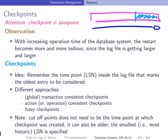We will investigate three different approaches. The first one is a very simple one called transaction-consistent checkpoints. The second one is called action-consistent checkpoints, and the last one is called fuzzy checkpoints.